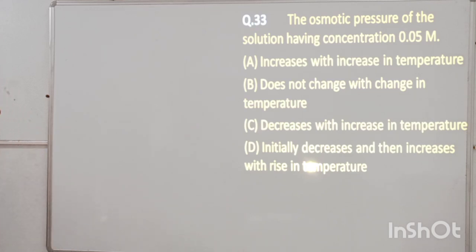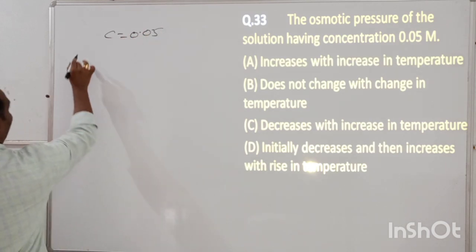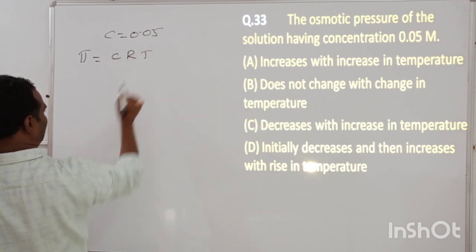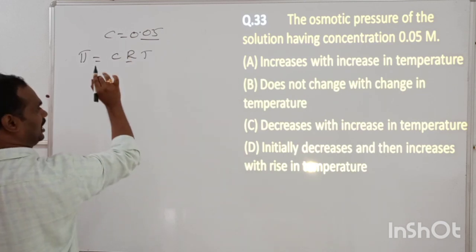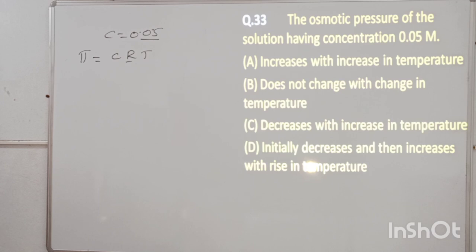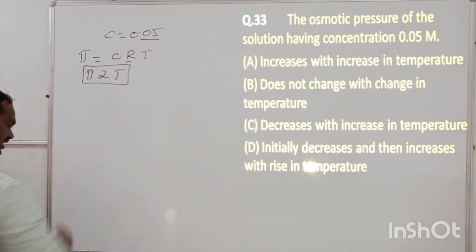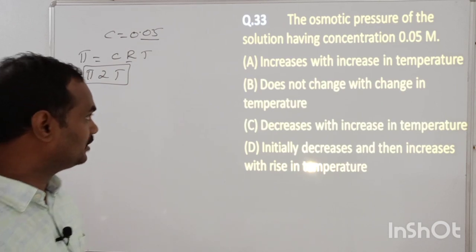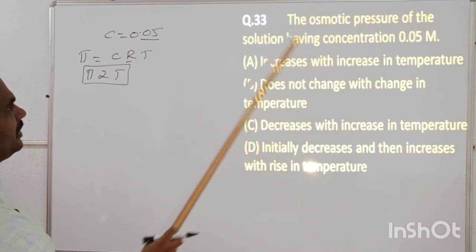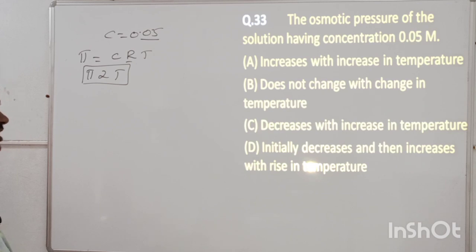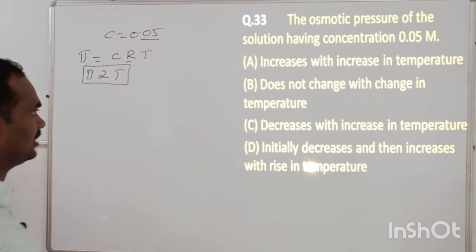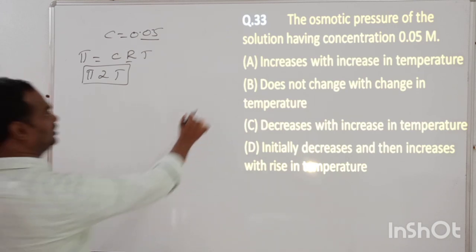Problem 33: Osmotic pressure of a solution of concentration 0.05 M — formula π = CRT. With C and R constant, π is directly proportional to temperature T. Therefore, osmotic pressure increases with increasing temperature. Correct option is A.